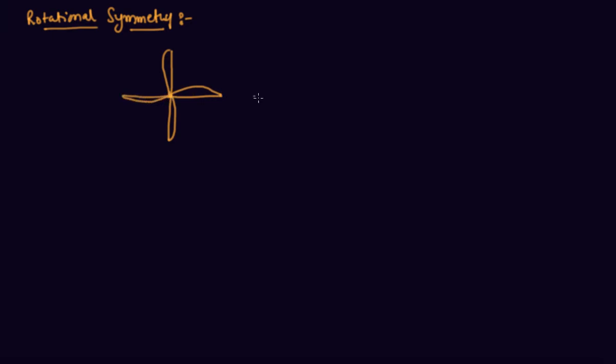This is the paper windmill. In this you can see that there is no line symmetry. If I cut the figure from here and fold it towards the line, you will find that there is no line symmetry. But you can see that this figure is somewhat symmetrical. So now let us check what symmetry this is.